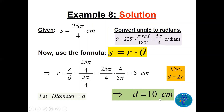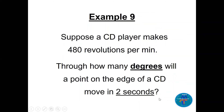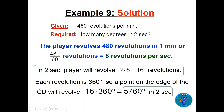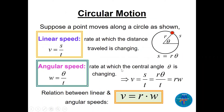Suppose a CD player makes 480 revolutions per minute. Through how many degrees will a point on the edge of the CD move in two seconds? In two seconds, the number of revolutions is 480 × (2/60) = 16 revolutions. Each revolution is 360 degrees, so 16 × 360 = 5,760 degrees in two seconds.